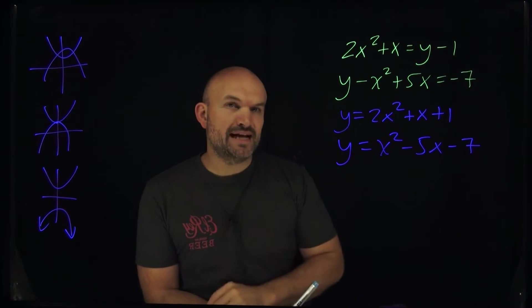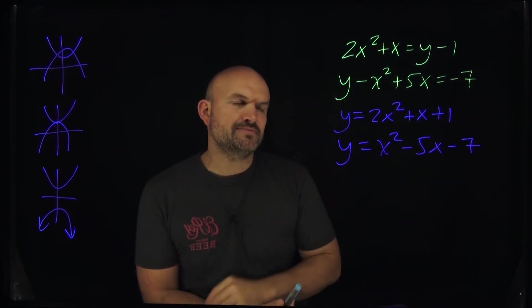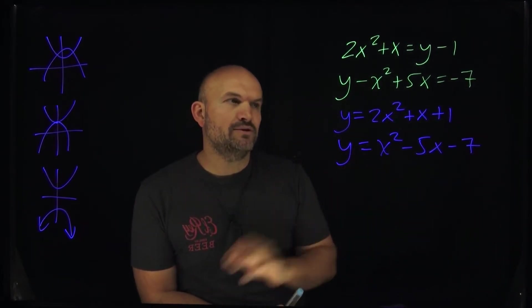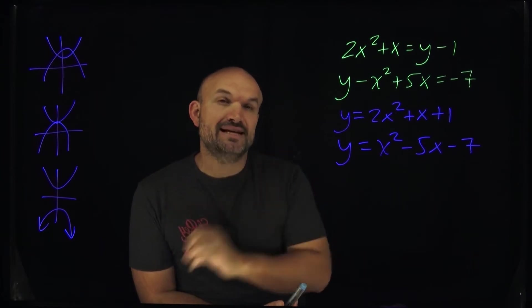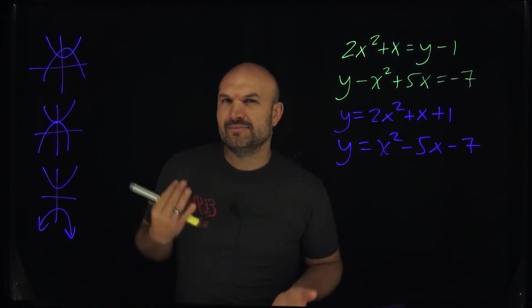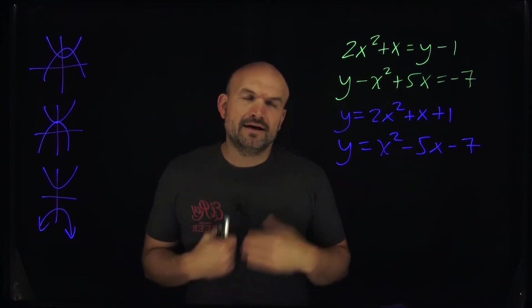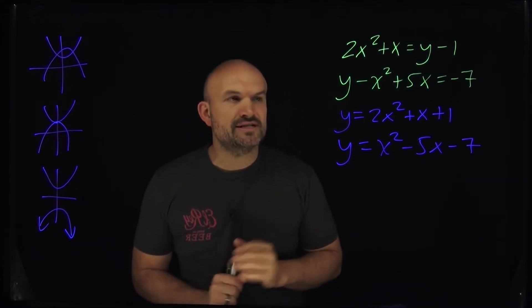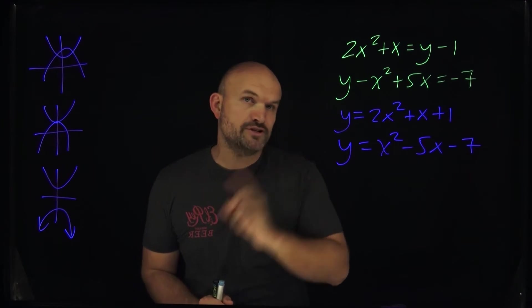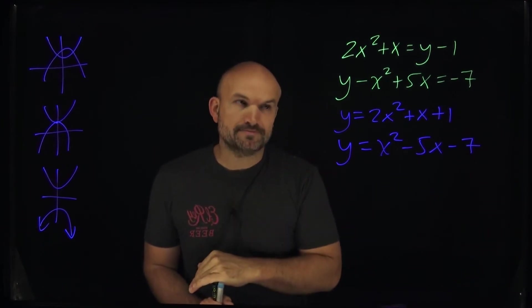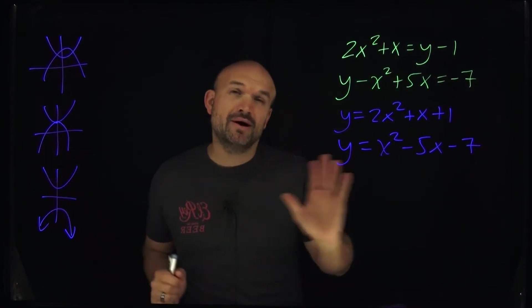Now the idea is should we use elimination now that everything's organized or should we use substitution? And I think the important thing to recognize is when we're dealing with simultaneous linear equations, substitution and elimination sometimes depends. It can go either way. The trick I usually like to tell my students is whenever there's a variable that has a coefficient of one, then use substitution. All the other times, go ahead and use elimination.